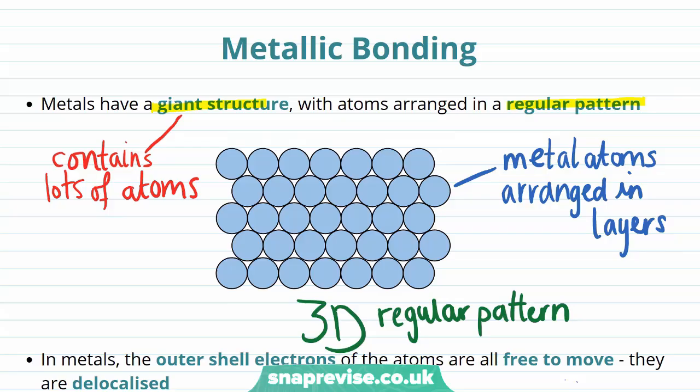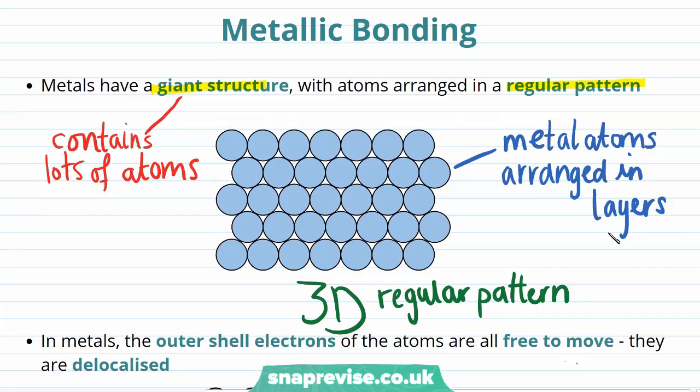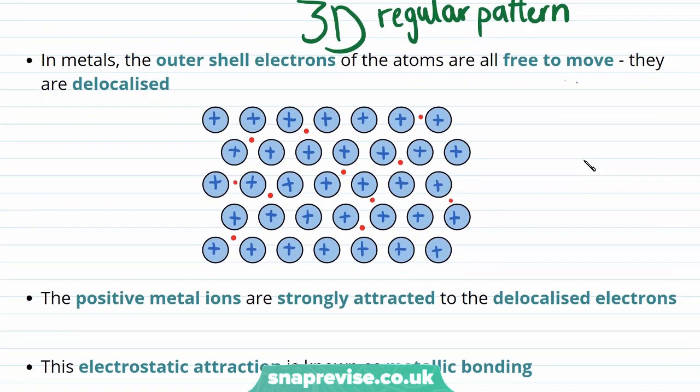Metallic bonding is simpler than ionic or covalent bonding, as there isn't any transfer or sharing of electrons. The distinctive feature is that the outer shell electrons of the atoms are all free to move. And the electrons in metallic bonding are often described as delocalised, which just means that they aren't associated with a particular atom or bond.